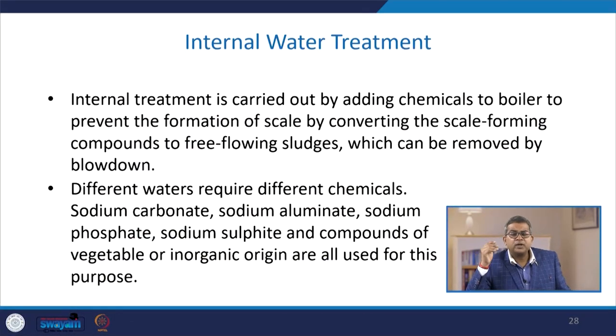Internal water treatment is carried out by adding certain chemicals to the boiler to prevent scale formation by converting scale-forming compounds into free-flowing sludges, which can be removed by blow down. Different waters require different chemicals; sodium carbonate, sodium aluminate, sodium phosphate, sodium sulphite, and compounds of vegetable and inorganic origins are all used for this purpose.